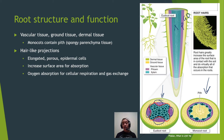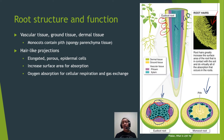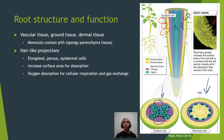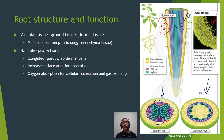Both monocots and dicots have root hairs — hair-like projections on the roots that are elongated porous epithelial cells. They increase the surface area of the roots, allowing for optimum absorption of water and nutrients. They can also undergo gas exchange and bring in oxygen for cellular respiration.